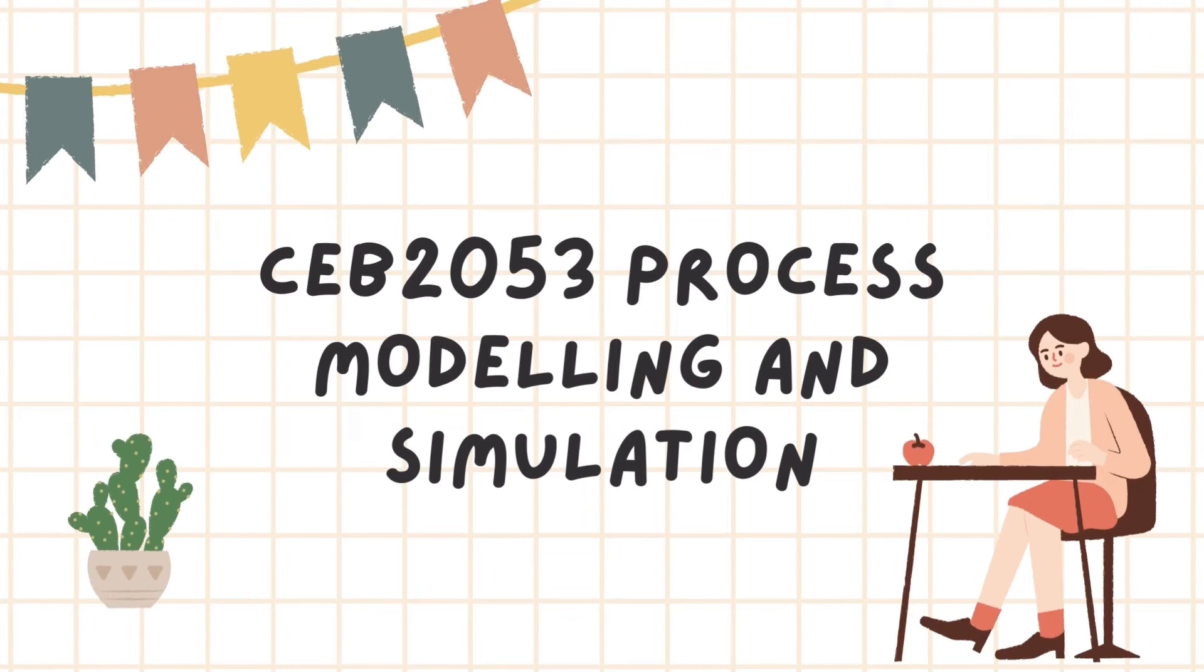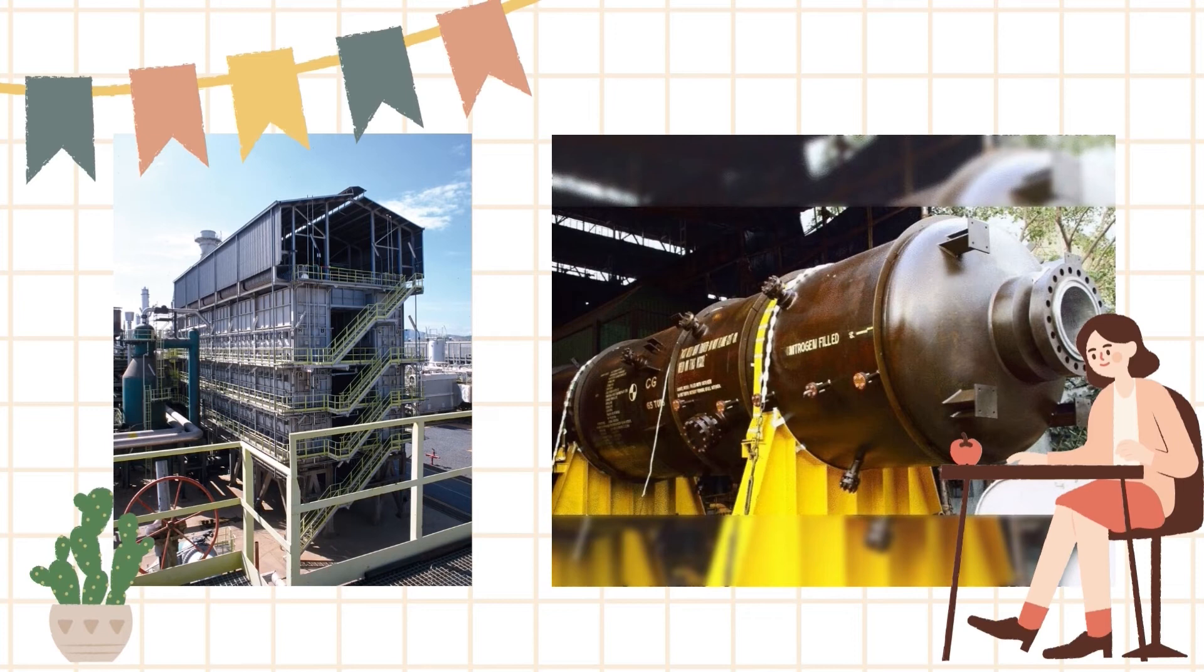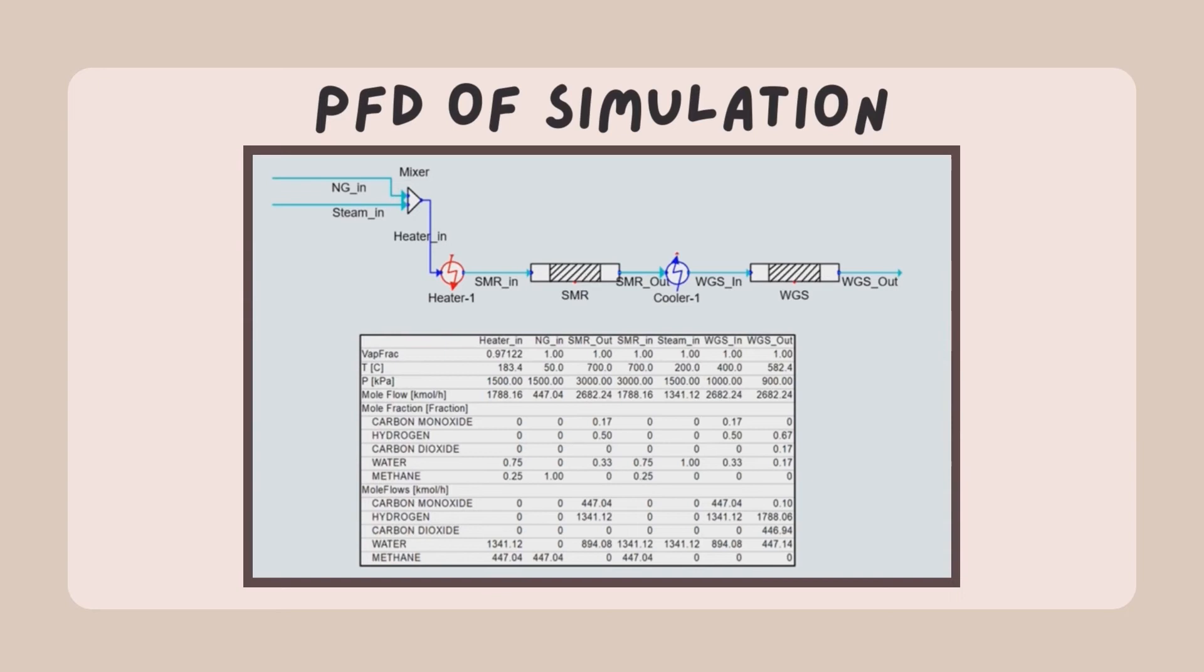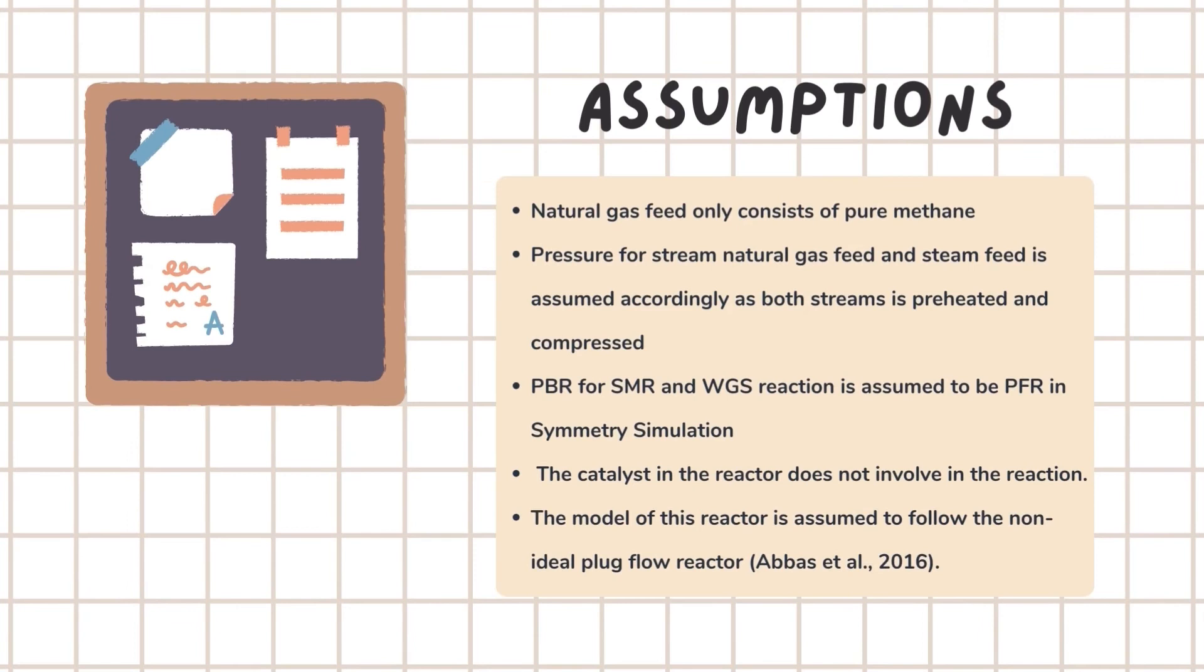For CEB2053, process modeling and simulation, the hydrogen production from steam methane reforming SMR process and water gas shift WGS reaction is simulated on Symmetry software. Here is the process flow diagram of the simulated process which involves several utilities such as mixer, heater, plug flow reactor and cooler. In order to simplify the model, several assumptions were made. One of the important assumptions is, the packed bed reactor for actual SMR and WGS process were assumed to be plug flow reactor PFR in the Symmetry simulation.